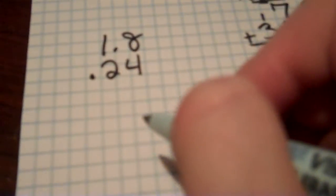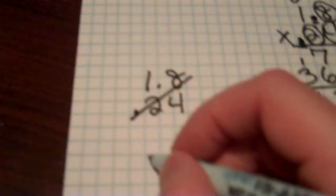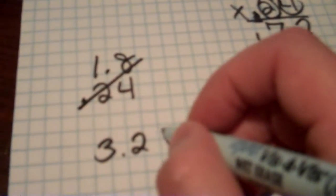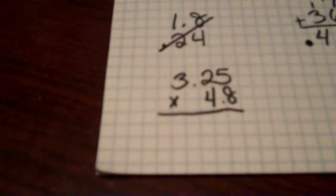All right. One more. This one might be a little tougher. Same problem. Let's try this one. 3.25 times 4.8.